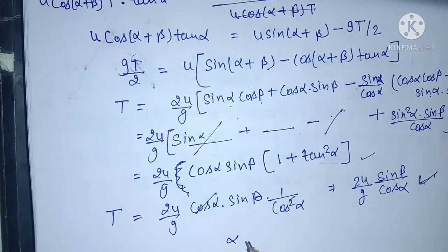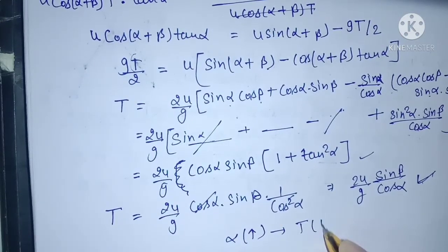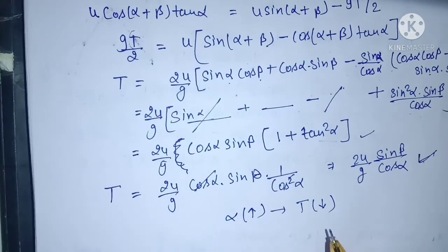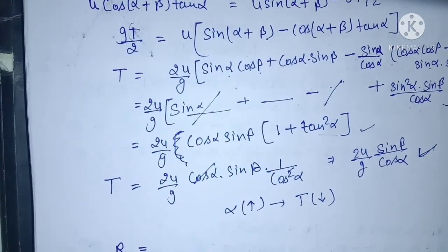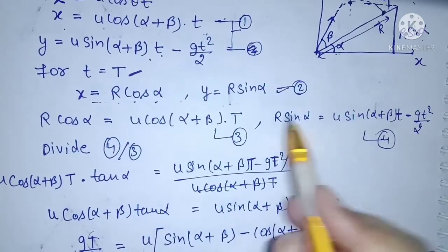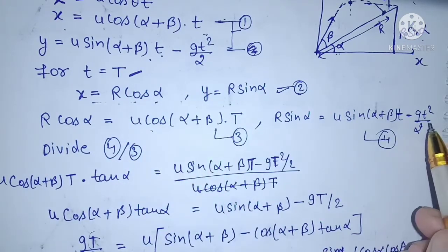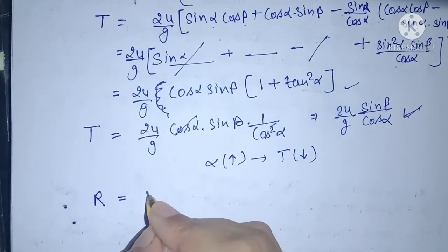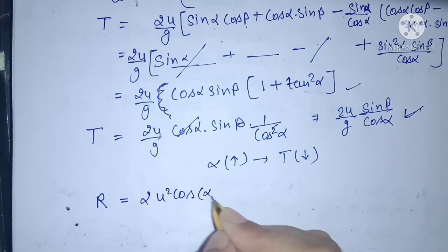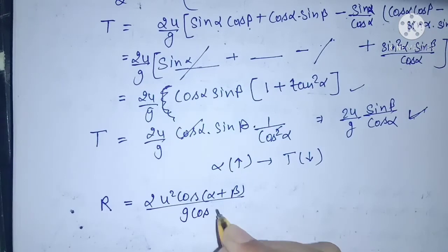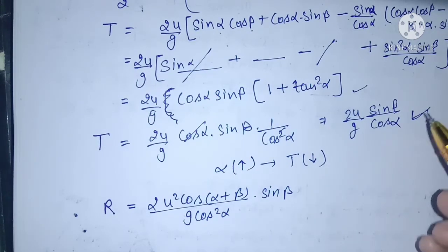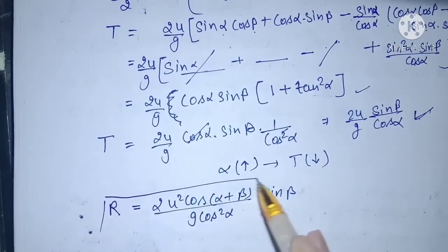Using Equation 3 and substituting the value of T, we can derive the range. After substituting T = 2u sin β / (g cos α) into R cos α = u cos(α+β) · T and simplifying, the final range formula for a projectile on an inclined plane is: R = 2u² cos(α+β) sin β / (g cos²α).